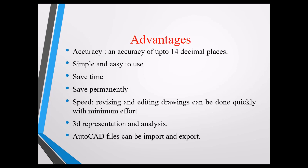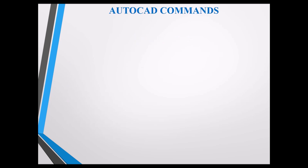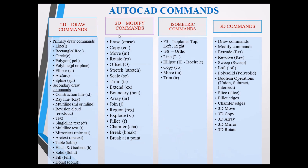Commands in AutoCAD are organized into categories: 2D Draw commands for drawing 2D objects, 2D Modify commands for modifying sketched objects, Isometric commands for isometric drawings, and 3D commands for 3D drawings.